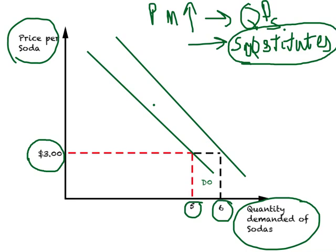We could also have shown a demand curve shift when income changes. Again, that would require a detailed exercise, but intuitively you can show the circumstances under which a demand curve may shift to the right or to the left.